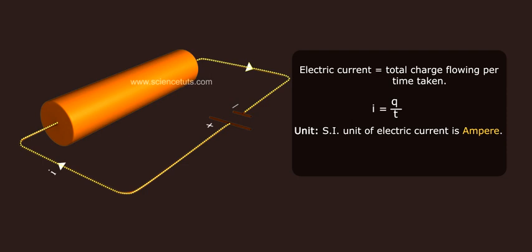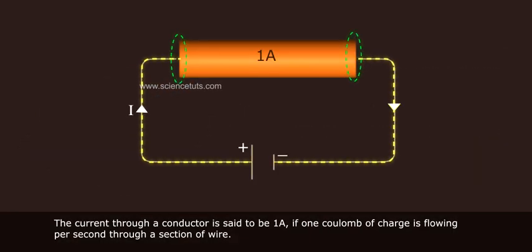Unit: SI unit of electric current is amp. 1 amp equals 1 coulomb per 1 second. The current through a conductor is said to be 1 amp if 1 coulomb of charge is flowing per second through a section of wire.